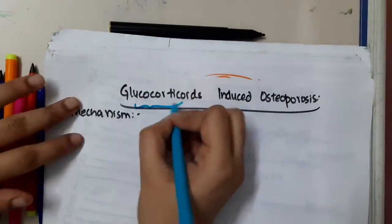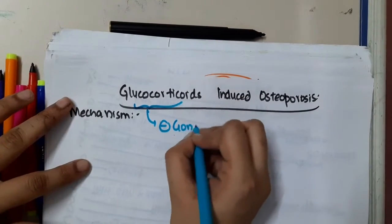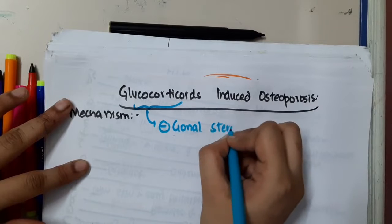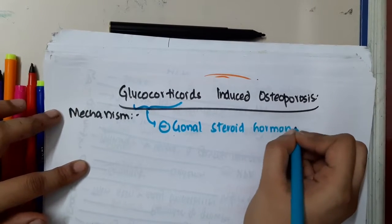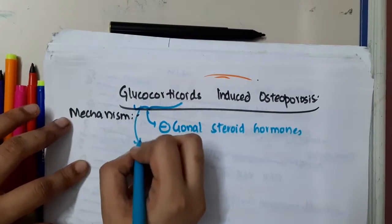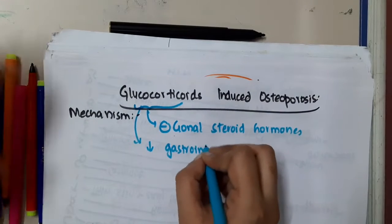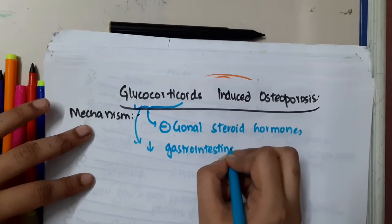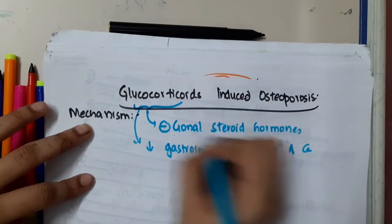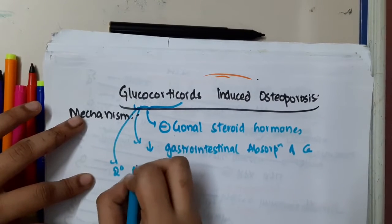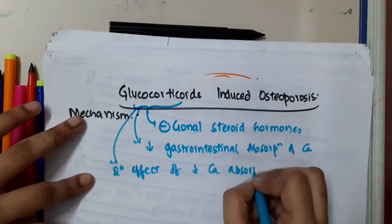First, Glucocorticoids will inhibit the gonadal steroidal hormones, which are very essential — especially estrogen, which is important in preventing osteoporosis. Second, it decreases the gastrointestinal absorption of calcium.